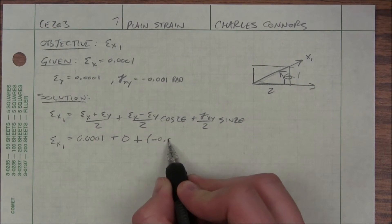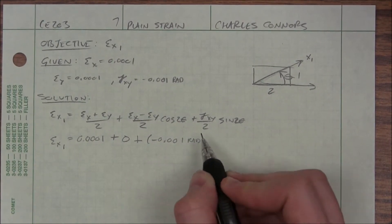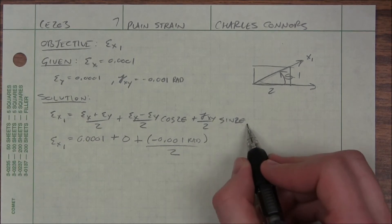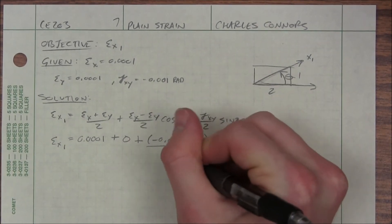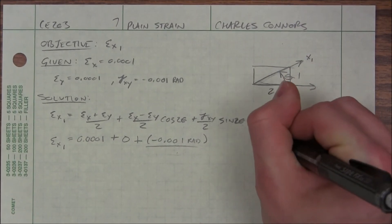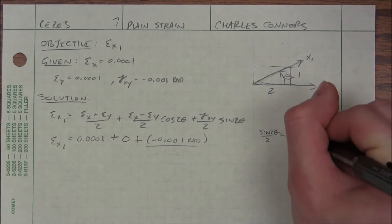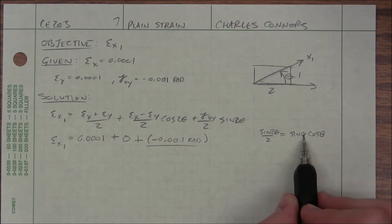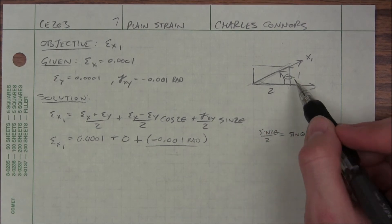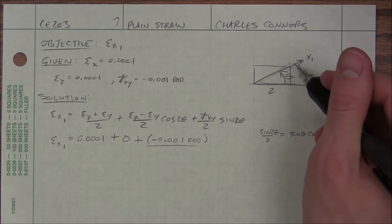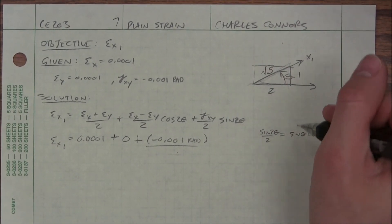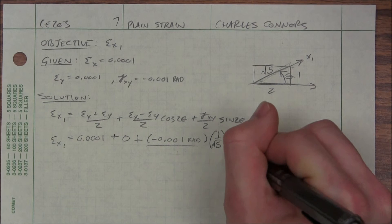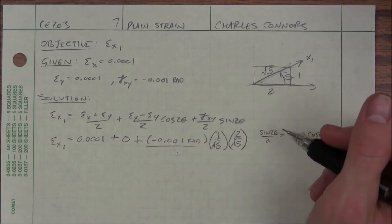I plug in negative 0.001 for gamma xy, divided by 2. I've got sine of 2 theta, and I'll pull a trick here. Using the identity: sine of 2 theta divided by 2 equals sine theta times cosine theta. So I need to find the angle from the dimensions of my box. The hypotenuse would be root 5. Sine theta is opposite over hypotenuse, so 1 over root 5. Cosine is 2 over root 5 — so I didn't even have to calculate the angle explicitly. Kind of nice.